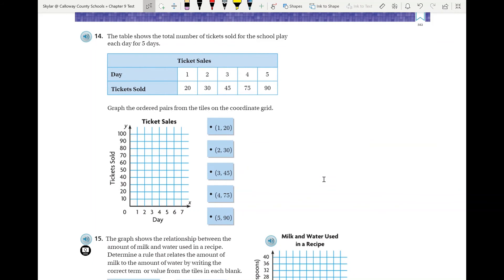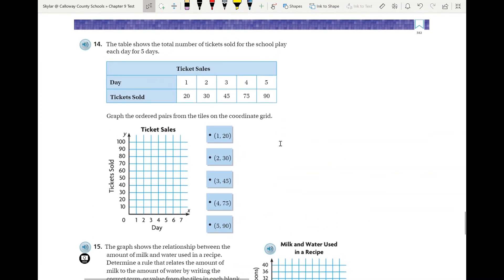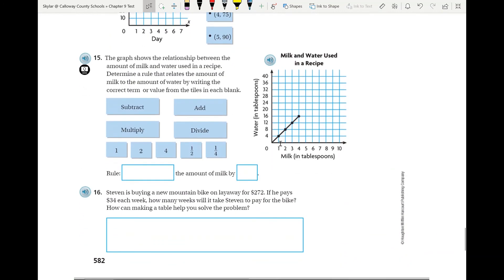Number 14: the table shows the total number of tickets sold for the school play each day. So all you have to do is just graph those points. Again, pretty simple. Very confident that you all can do that.